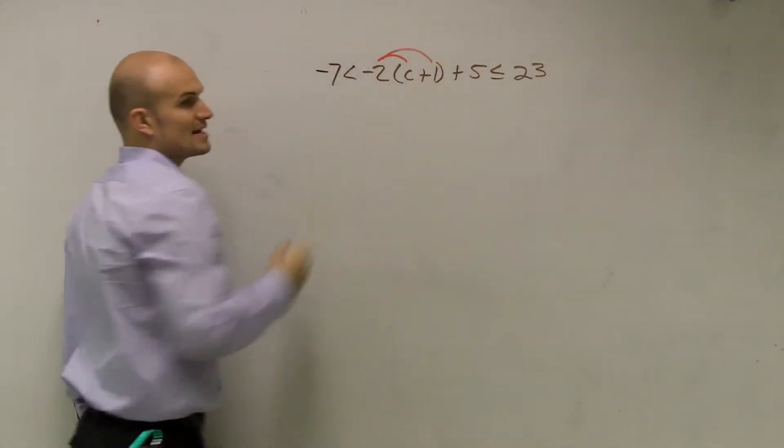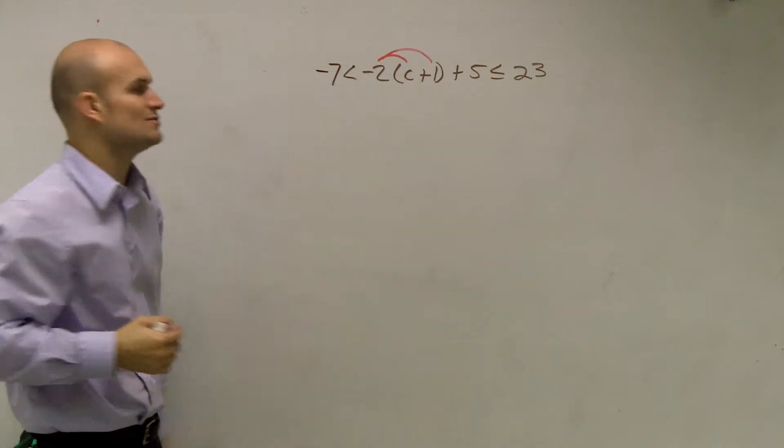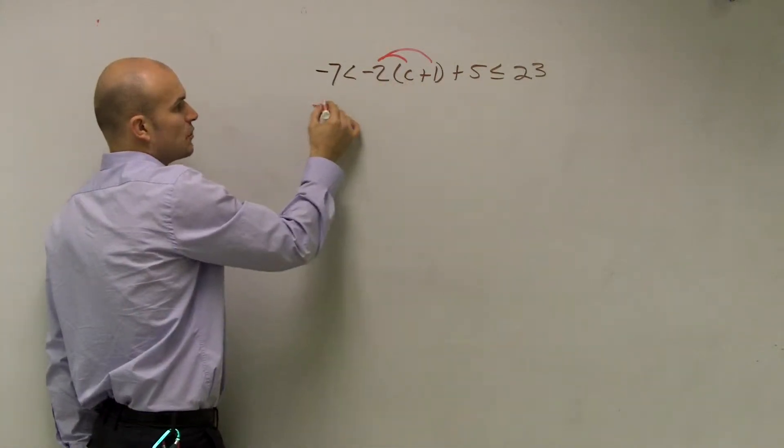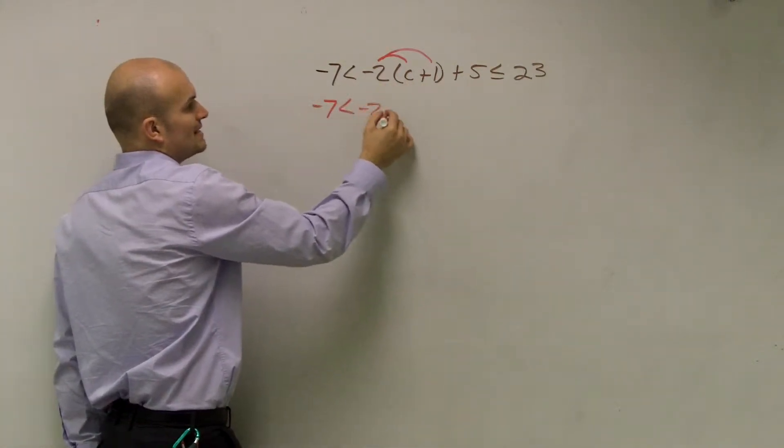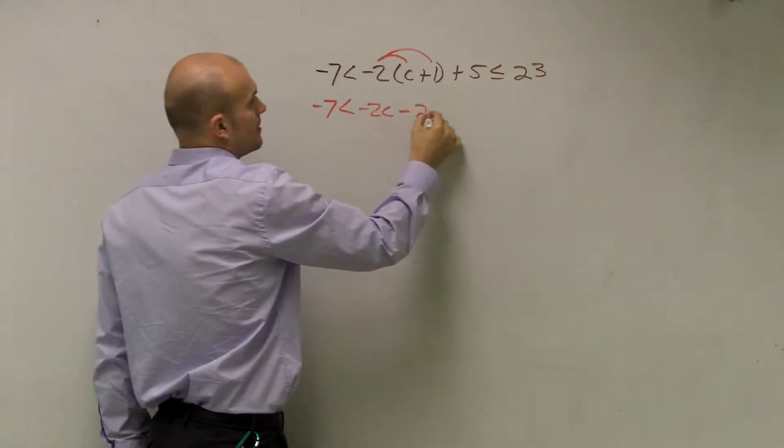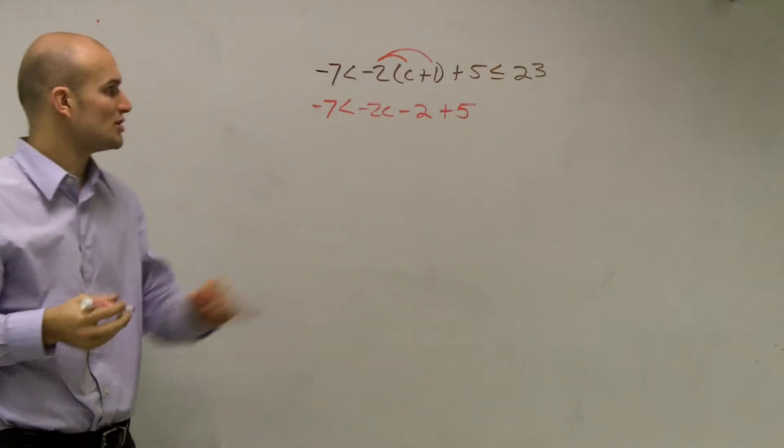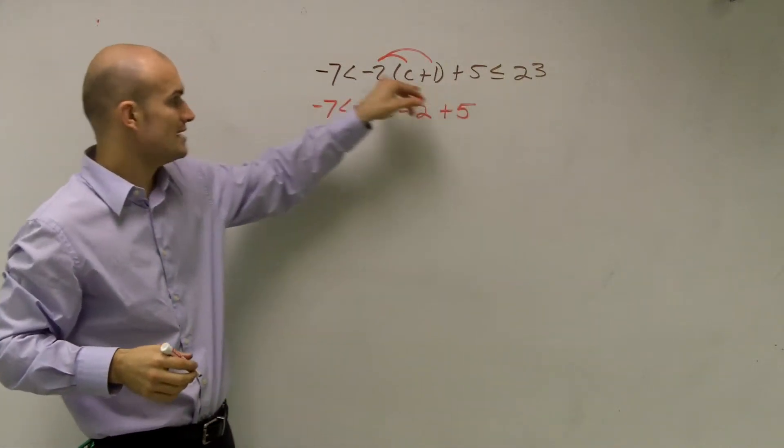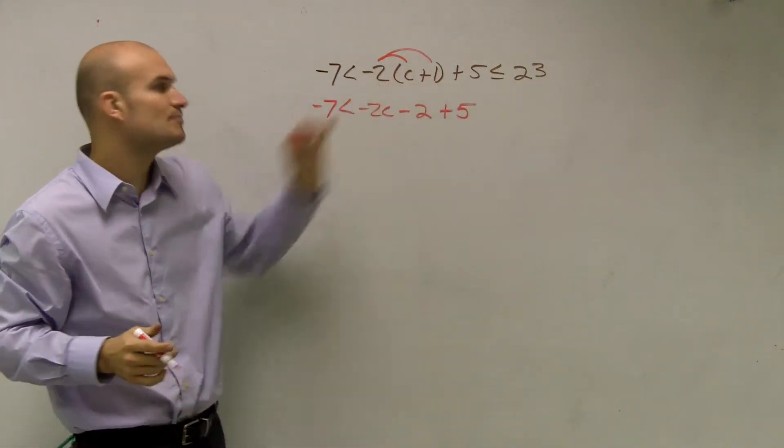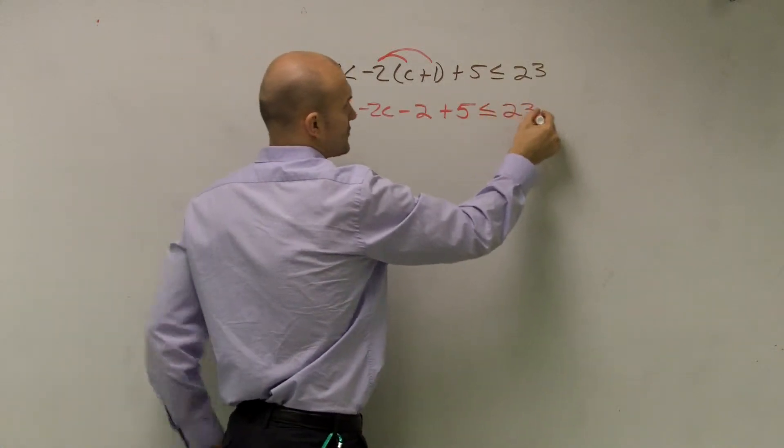So if I see this negative 2 outside of there, what I can do is multiply the negative 2 times c and the negative 2 times 1. Therefore, now I obtain negative 2c minus 2 plus 5. Do not make the mistake of multiplying the negative 2 times the 5. The negative 2 is only multiplied by the c plus 1, and that's less than or equal to 23.